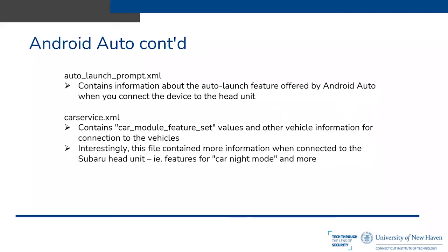The auto_launch_prompt.xml file contains information about Android Auto's auto launch feature — when you connect the device to the head unit, you don't have to manually open Android Auto. The carservice.xml file contains the car module feature set values and other vehicle connection information. Compared to the Alpine stereo unit, the Subaru head unit's version of this file contained additional features such as Carmite mode and other Subaru-specific features.